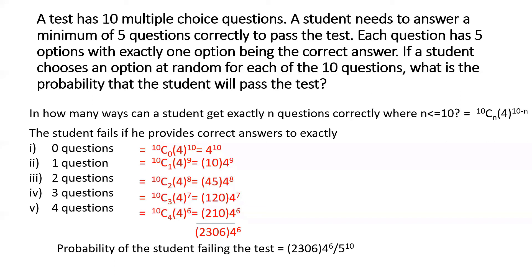So the probability of the student failing the test would be 23,064 into 4 to the power 6 divided by 5 to the power 10. Because remember, 5 to the power 10 is the total number of ways this test can be answered. So that will be in the denominator. And the probability of him passing the test would be simply you subtract the probability from 1 and you get the probability to pass the test. It will be good to leave this here, but I just calculated the probabilities with the calculator. So it comes to be 0.97, that's the probability of student failing the test, and 0.03 is the probability of the student passing the test.